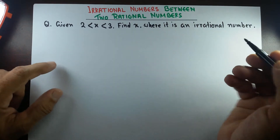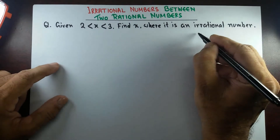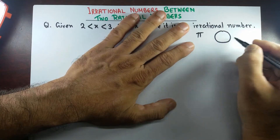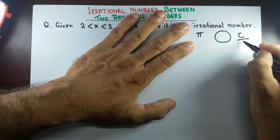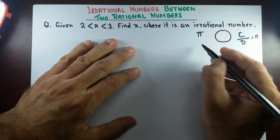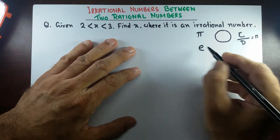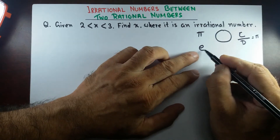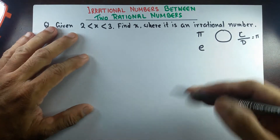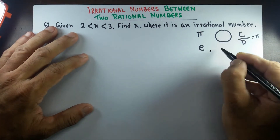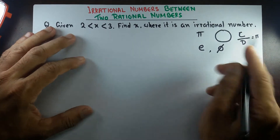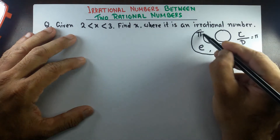Probably you already know some of the famous irrational numbers. They are pi — this is actually the ratio of circumference to the diameter of a circle — and then probably you've heard about e, which is the base of the natural logarithm and appears in exponential growth or decay. Or you may have heard a very famous one, phi, which is known as the golden ratio. These are all irrational numbers.